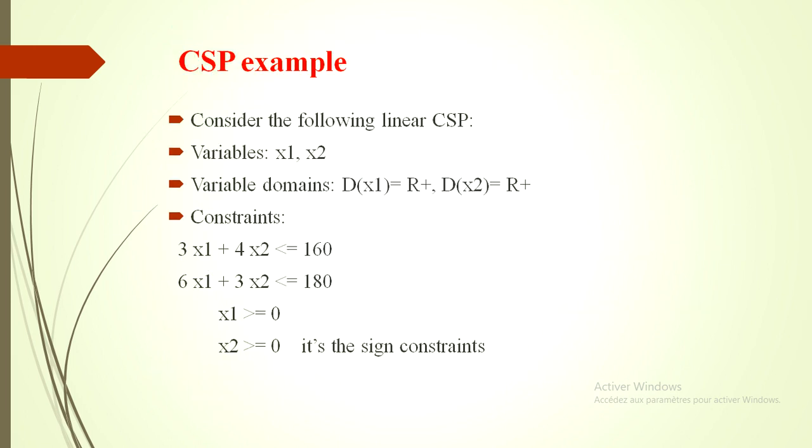This is an example of the model CSP. Consider the following linear CSP. Variables, we have two variables, X1 and X2. The variable domains are X1 is in R positive, X2 in R positive, and the constraints are the relationship between X1 and X2. We have 3X1 + 4X2. We see that the constraints are numeric, so the type of the CSP is numeric. We will see the different types of the CSP model.